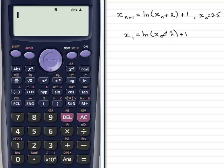But what is x_0? x_0 is 2.5, so we've got the natural log of 2.5 plus 2, which is 4.5, and then add 1.